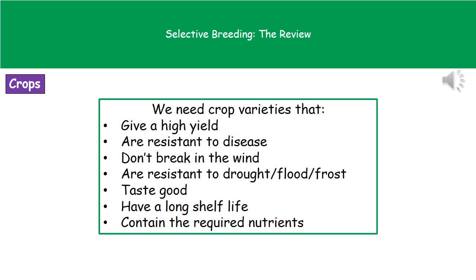We can also do this with crops. When we think about what people need from their crop plants, we need ones that are going to give us a high yield — producing a large amount of that particular material. We need them to be resistant to disease so they don't die off easily, and we don't want them to break in the wind, because otherwise a slight breeze would cause our plants to all die.